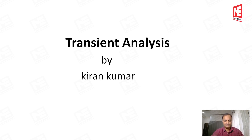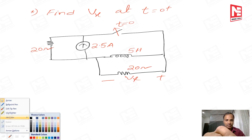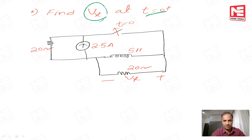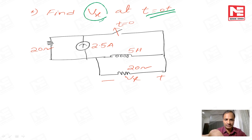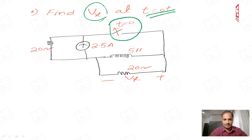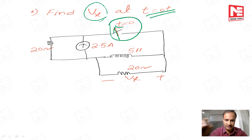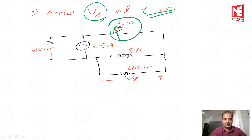Now let's take one simple example. In this example our requirement is the Vx value at t equal to zero plus instant. In transient problems, every time concentrate on the switch position very carefully. In this example, at t equal to zero seconds the switch is open — focus on the arrow mark very carefully; the arrow mark pointing upwards means the switches are open at t equal to zero seconds.